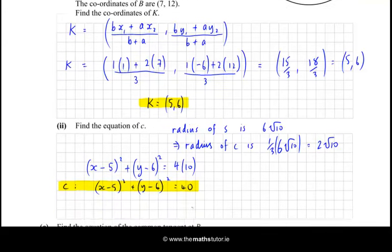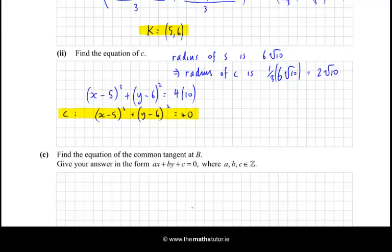Now finally, we're told find the equation of the common tangent at B. Give your answer in the form ax + by + c = 0. So what we have is 2 circles which meet internally at the point (7, 12). So the common tangent will be a tangent which is a line going through that point. That's going to be the point of tangency. It'll be a tangent to both circles, and it'll also be perpendicular to the line from either of the two centres to that tangent.